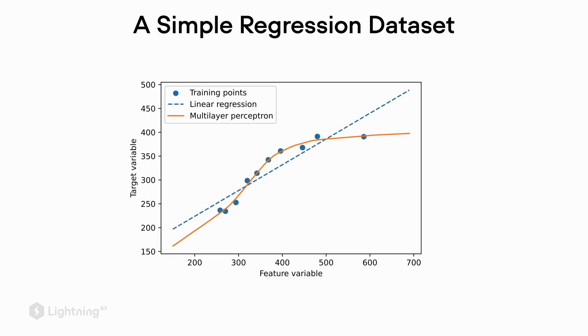And here's how a regression fit might look like using a multilayer perceptron. As you can see, it fits the data quite well. Multilayer neural networks are actually pretty good at fitting data, which is also sometimes a little bit dangerous because it can easily lead to overfitting.